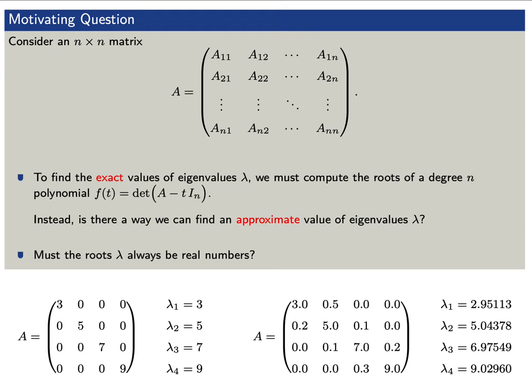However, let's change the values of matrix A just a little bit. We'll keep the same values along the main diagonal — that is, 3, 5, 7, and 9 — but just off the main diagonal, instead of having zeros, let the entries vary a little from 0.1 to 0.3. Then, if we compute the eigenvalues exactly, we see that they are very close to 3, 5, 7, and 9. In this case, they are approximately 2.95, 5.04, 6.97, and 9.03.